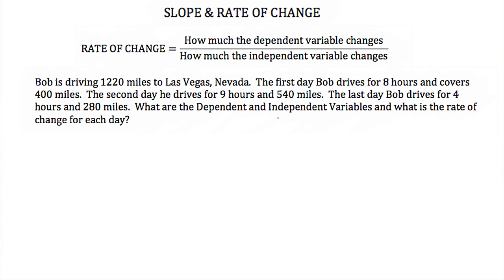Our independent variable should be time, and our dependent variable should be the miles that Bob drives. This is because the amount of miles that Bob drives is dependent on how much time he spends driving.